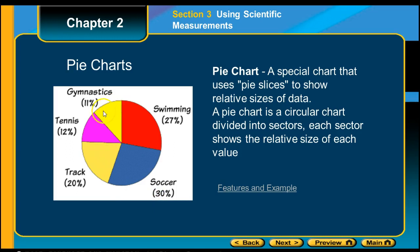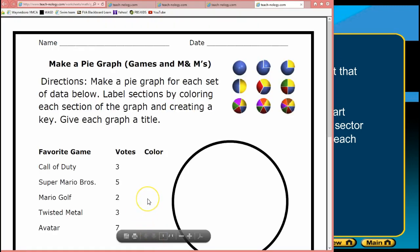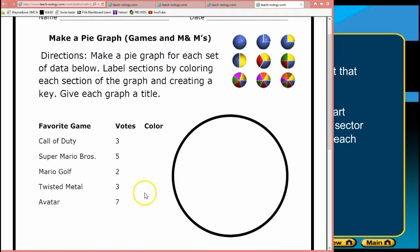And gymnastics is, I'm guessing, this light yellow over here, and it's 11, so it should be smaller than the soccer. Hold on one second, and I'll show you an example. Here's how we could make a pie chart. You have your three, five, two, three, and seven of the favorite games.